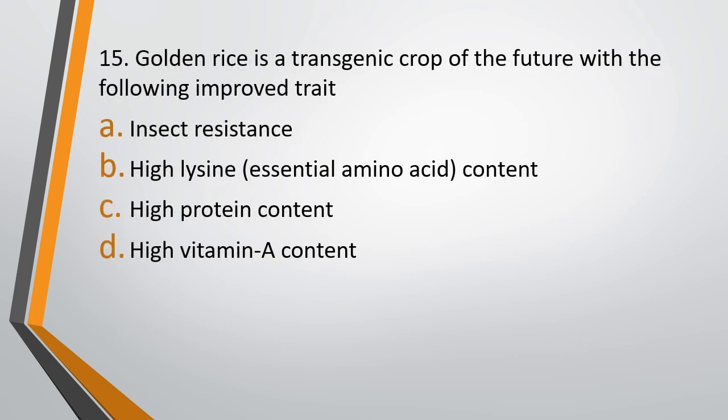Question 15. Golden rice is a transgenic crop of future with which of the following improved traits? The correct answer is option D, that is it has high vitamin A content.